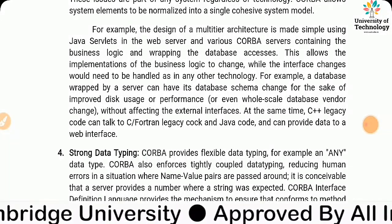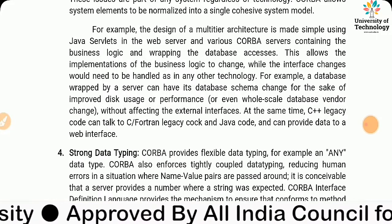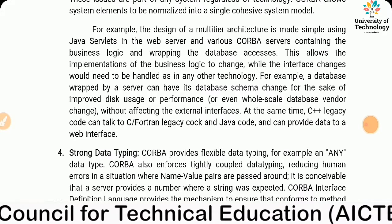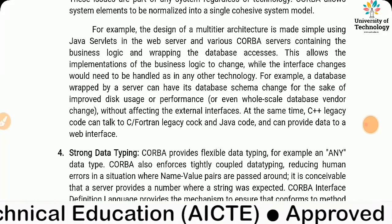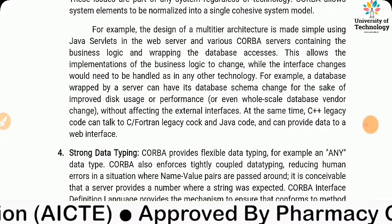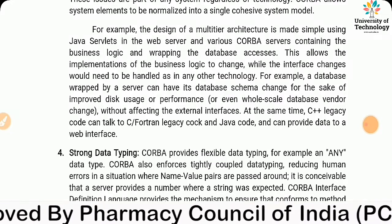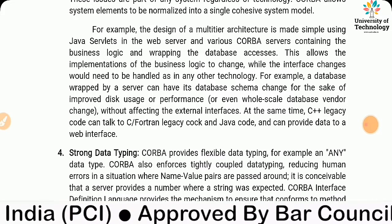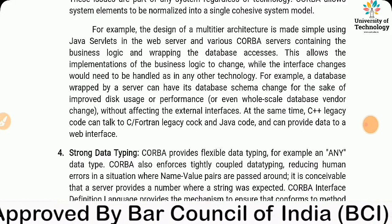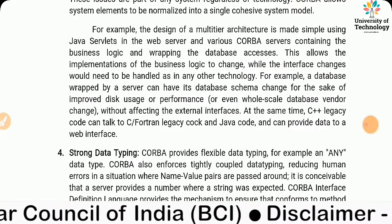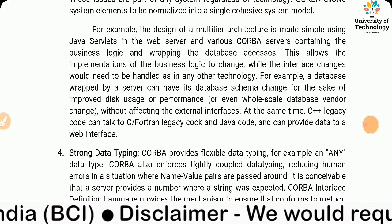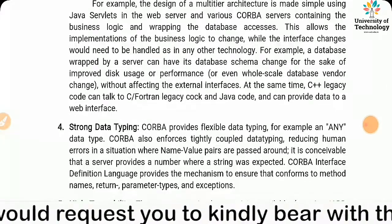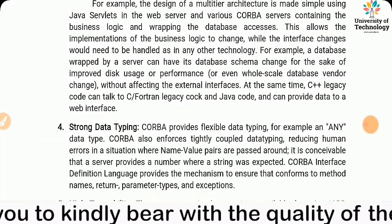The design of multiple architectures is made simple using Java servlets in the web server and various CORBA servers containing the business logic and wrapping the database accesses. This allows the implementation of the business logic to change while interface changes are handled as in any other technology. For example, a database wrapped by a server can have its schema changed for improved disk use or performance without affecting external interfaces. C++ legacy code can also talk to Fortran legacy code and Java database code, and provide data to a web interface.